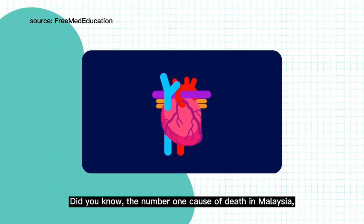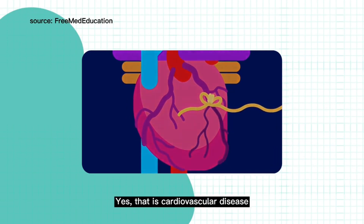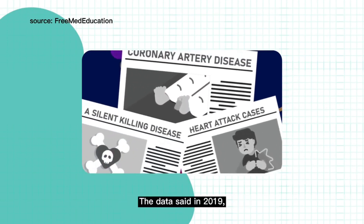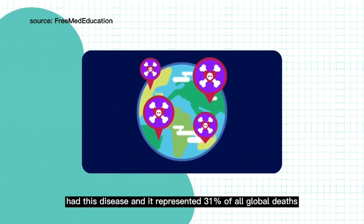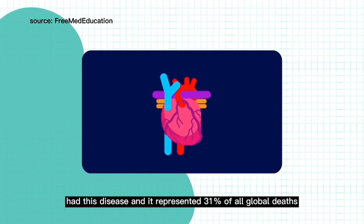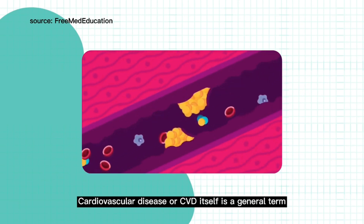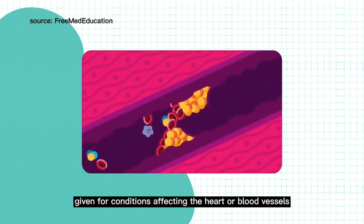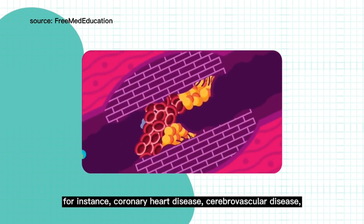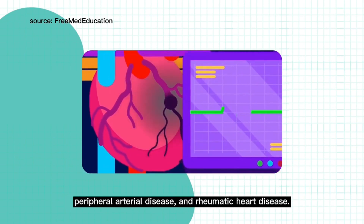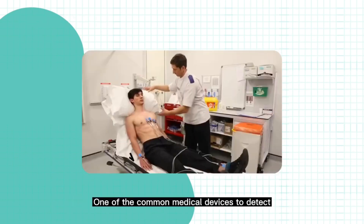Did you know the number one cause of death in Malaysia, and even in the world, is cardiovascular disease? In 2019, 17.9 million people worldwide had this disease, representing 31 percent of all global deaths. Cardiovascular disease, or CVD, is a general term for conditions affecting the heart or blood vessels, such as coronary heart disease, cerebrovascular disease, peripheral arterial disease, and rheumatic heart disease.